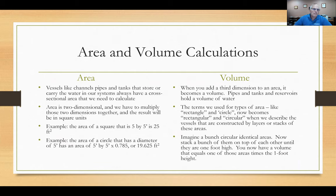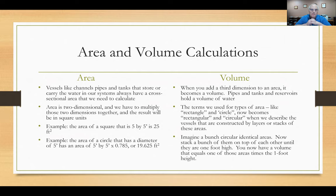Area. Vessels like channels, pipes, and tanks — anything that stores or carries water in our distribution system — will have a cross-sectional area. Area is always two-dimensional; you multiply those two dimensions together and the result is always in square units. For example, a square that is five feet by five feet gives 25 square feet. A circle with a diameter of five feet has an area of 5 × 5 × 0.785, or 19.625 square feet.